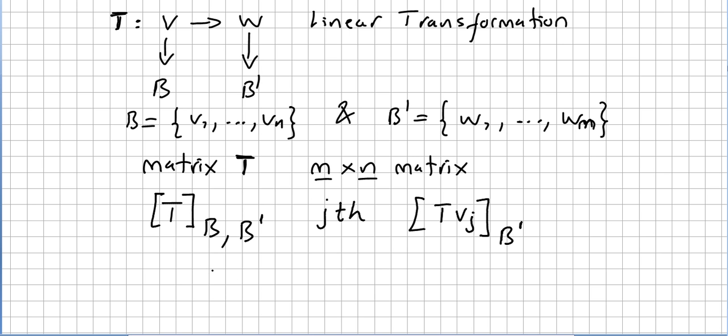You might prefer to write the transformation this way. Transformation of Vj will be the sum from i starting in 1 to m of Aij and this will be the entries of the matrix and Wi.